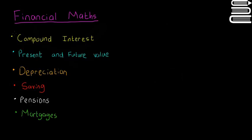This series is going to be about financial maths. The order we're going through these topics is as bullet pointed here. First, compound interest, then present and future value of money, then depreciation in just one short video. Then the three hard topics: savings, pensions, and mortgages.